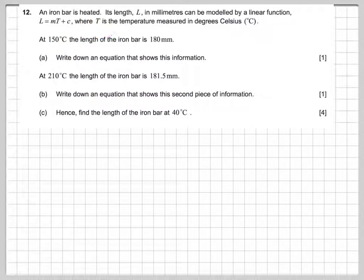An iron bar is heated. Its length L in millimeters can be modeled by the linear function L equals mT plus C, where T is the temperature measured in degrees Celsius. At 150 degrees C, the length of the bar is 180 millimeters. Write down an equation that shows this information.